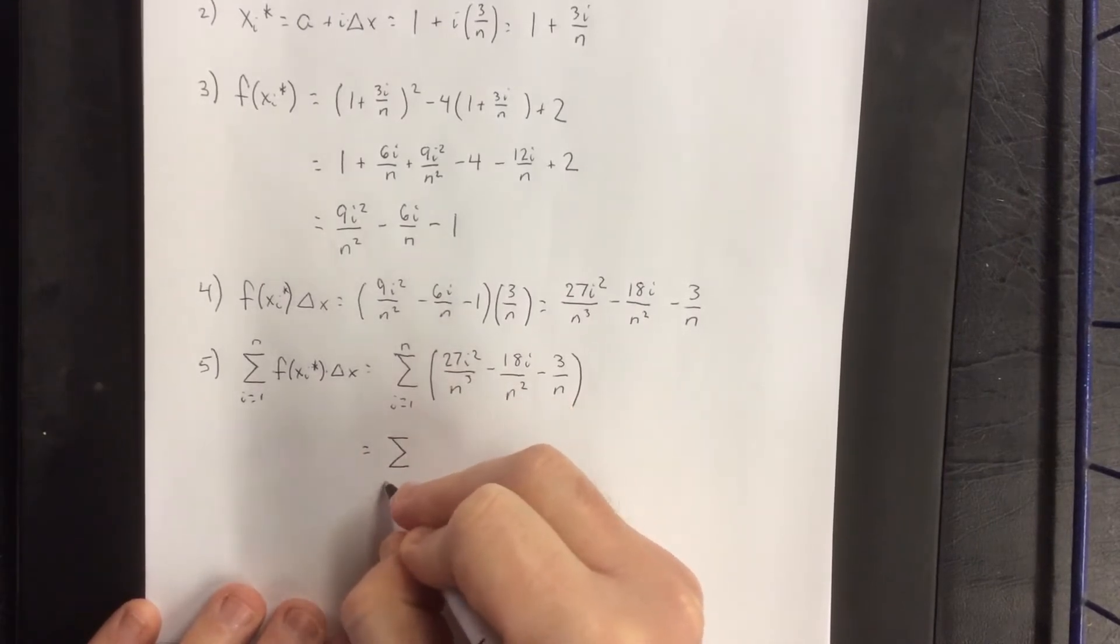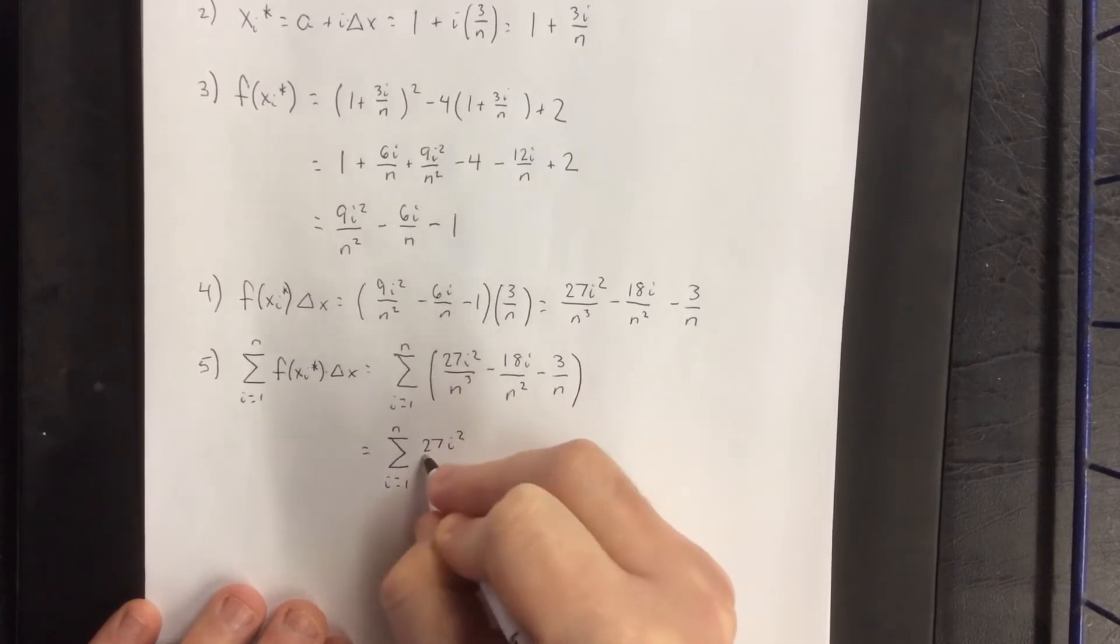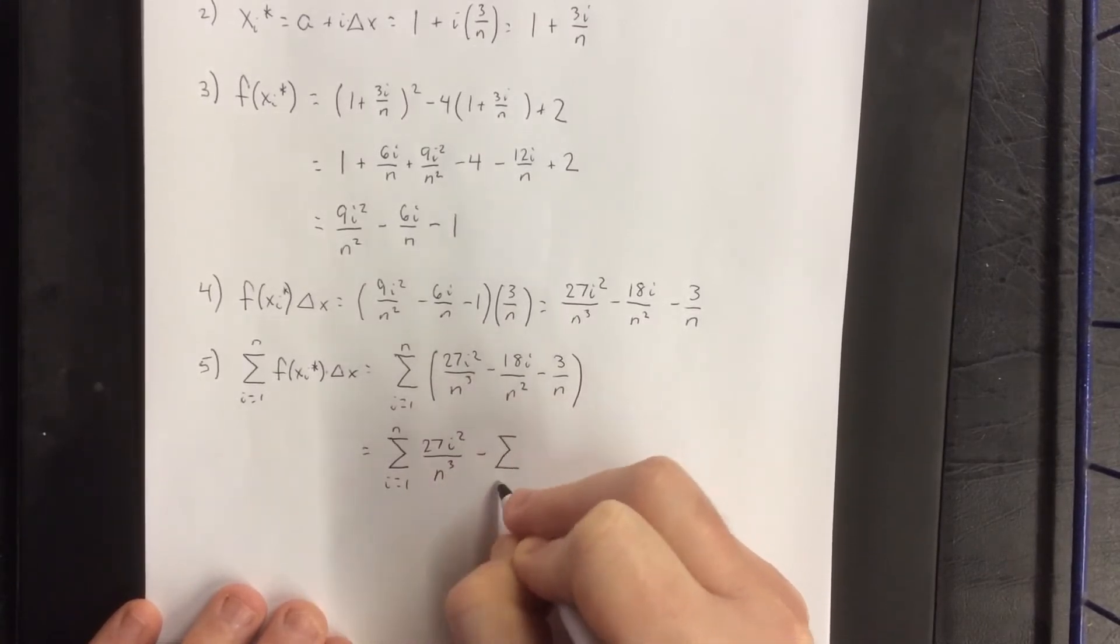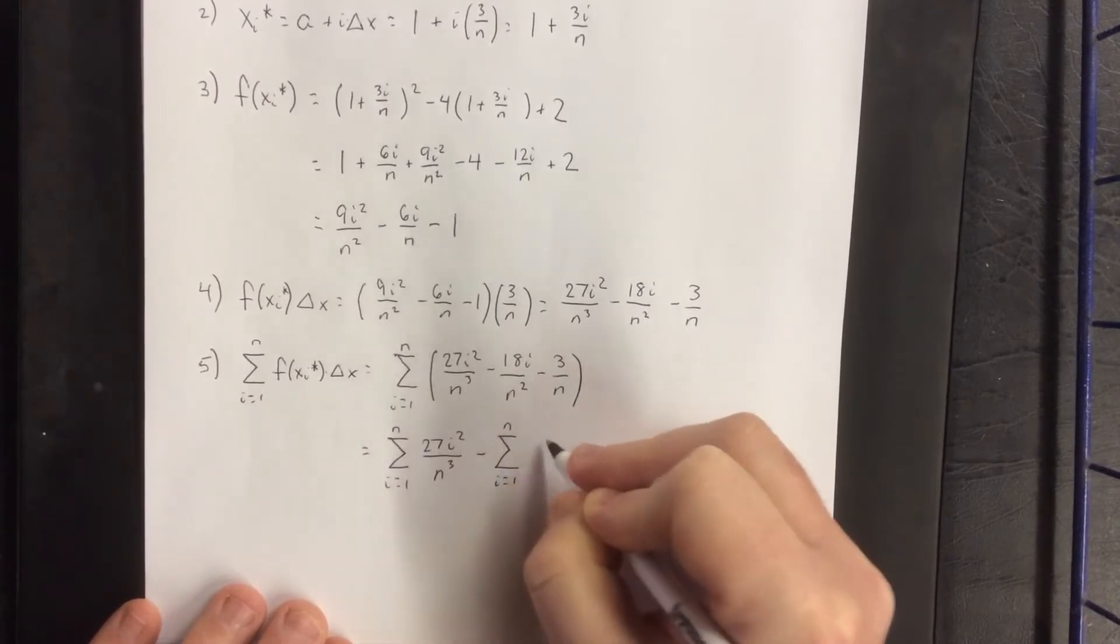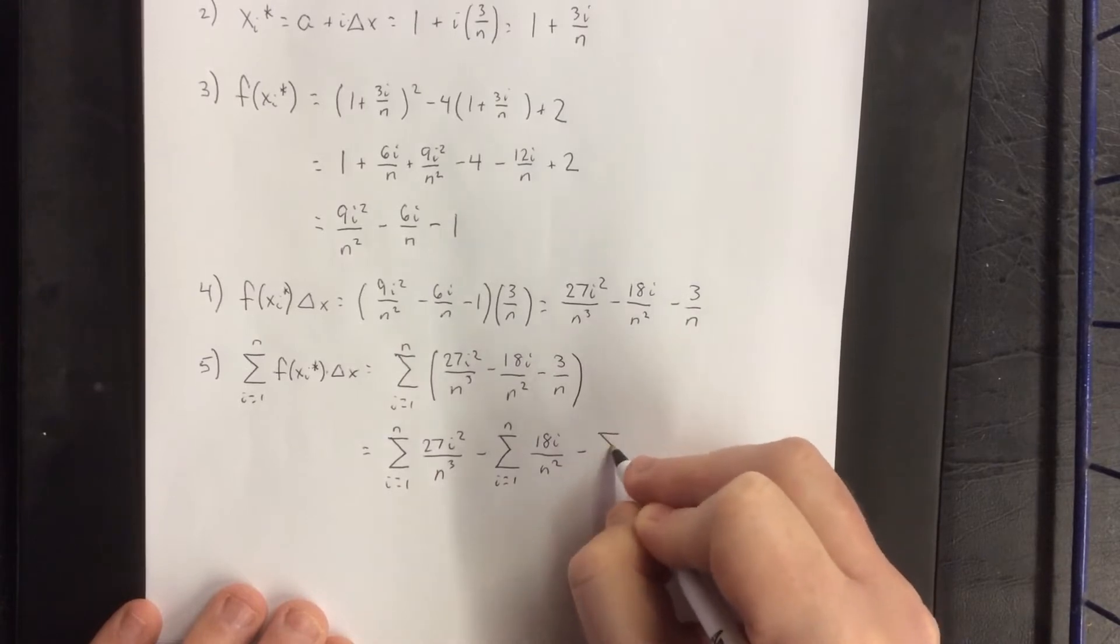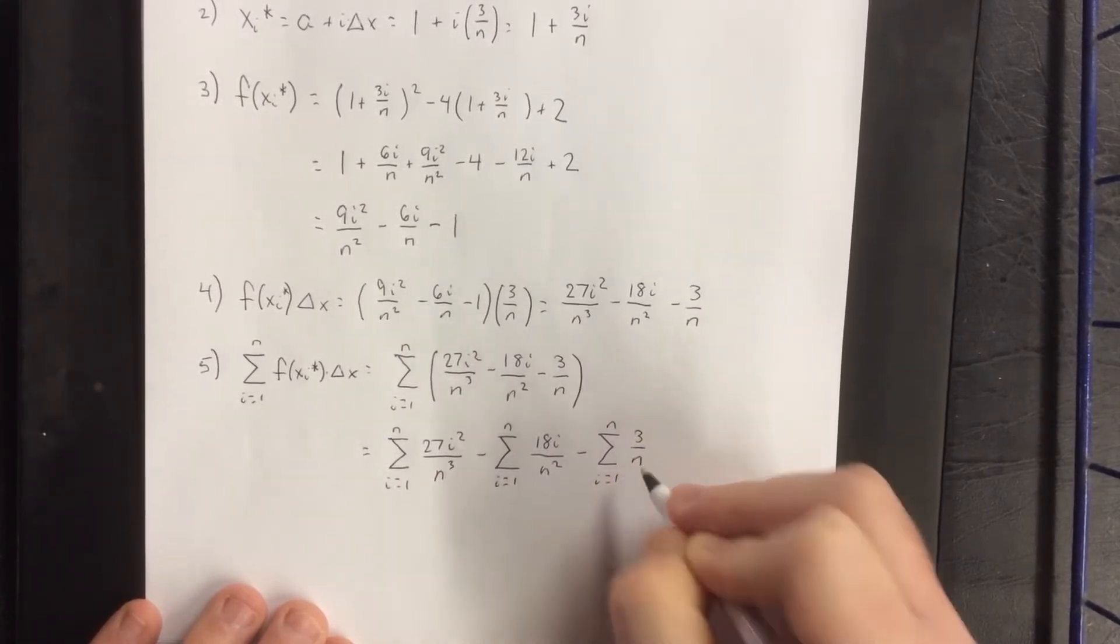So this would be the sum from i equals 1 to n of 27i squared over n cubed minus the summation from i equals 1 to n of 18i over n squared minus the summation from i equals 1 to n of 3 over n.